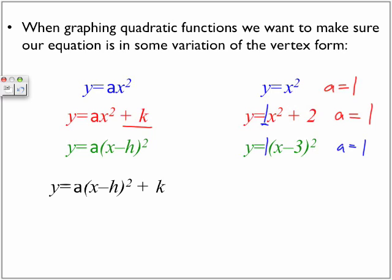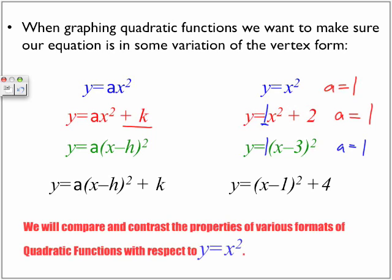And the last example, the vertex form, the actual vertex form, y is equal to a, x minus h squared plus k. It can be written as y is equal to x minus 1 squared plus 4. Now, we will compare and contrast the properties of various formats of quadratic functions with respect to y is equal to x squared. So, pretty much all of them are going to be, to some extent, congruent to this version. But, they change based on whatever our a value is.